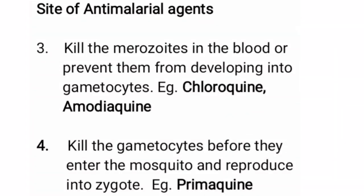The third site is to kill the merozoites in the blood or prevent them from developing into gametocytes. Examples are chloroquine and amodiaquine. The last site is to kill the gametocytes before they enter the mosquito and reproduce the zygote. Example is primaquine.